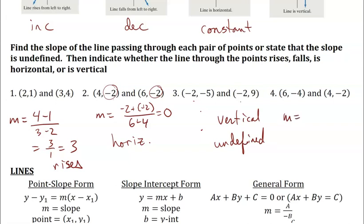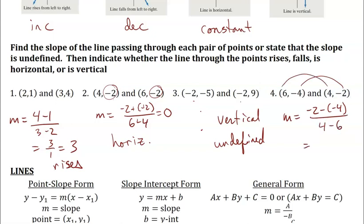For these two different points, I'll compute y2 minus y1: negative 2 minus negative 4, over x2 minus x1: 4 minus 6. That gives me negative 2 plus 4 over negative 2, which is 2 over negative 2, or negative 1. So this line falls from left to right.